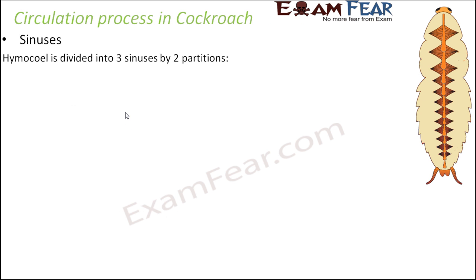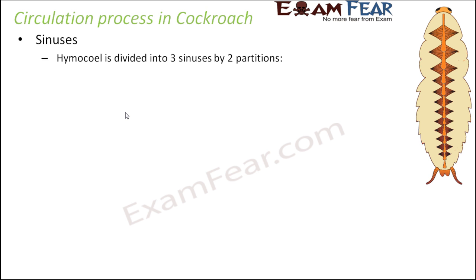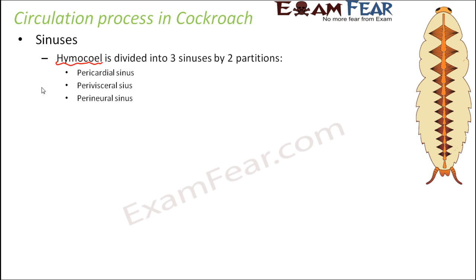The third part is the sinuses — empty spaces filled with blood. The hemocele is divided into three sinuses by two partitions: the pericardial sinus, the perivisceral sinus, and the perineural sinus. These are the three sinuses separated from each other by partitions.